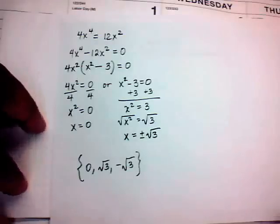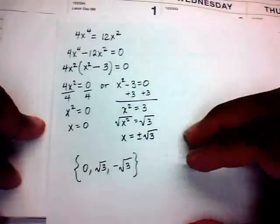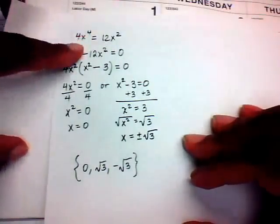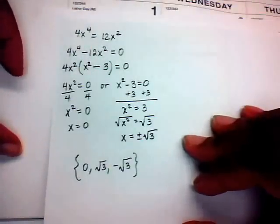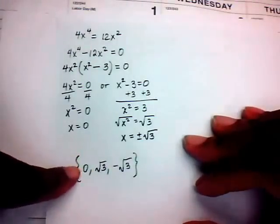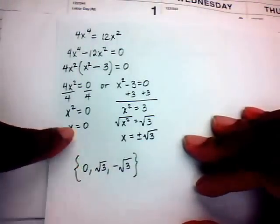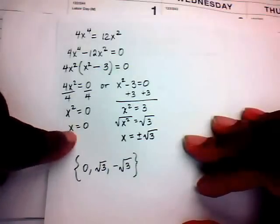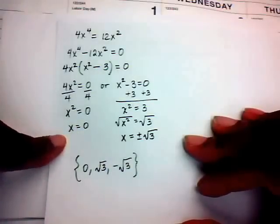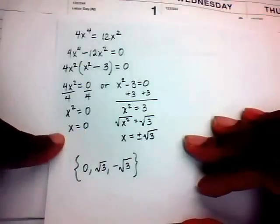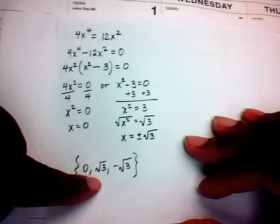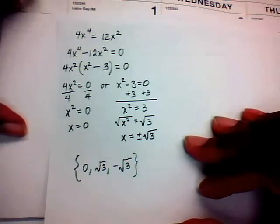That's the solution to this fourth-degree polynomial. It would typically have four solutions, but we got three because x = 0 is a double root — it counts as two solutions: x = 0 and x = 0 again, along with √3 and −√3.